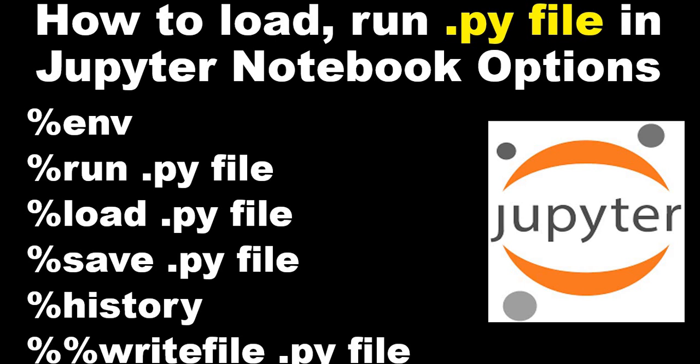Hi everyone, welcome to the session where I'll show you how to load and run the python .py file in Jupyter Notebook. Along with this, we will use commands like how to execute the environment variable, then we'll execute %run, %load, save the file with different options, how to write the file, and how to use the history command with different options. So let's start.